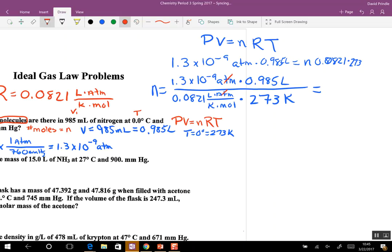N is equal to 1.3 times 10 to the negative ninth atmospheres times 0.985 liters divided by 0.0821 liter atmospheres Kelvin moles times 273 Kelvin. What units cancel out here? ATMs, liters, and Kelvin, so you're left with moles.